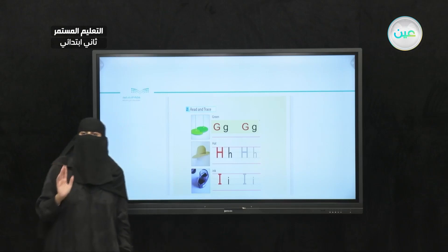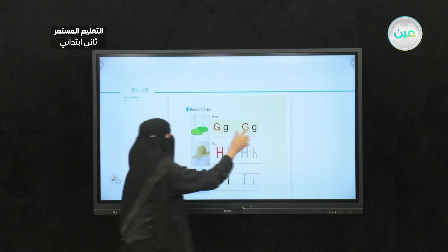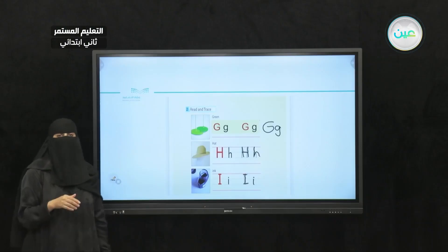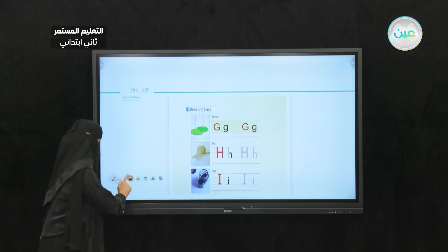G — green, go, geography. Next one, I have the letter H. I have capital H and small h. The word here is hat. HA, hat. Very good. Next one is the letter I. Capital I and small i. The word is ink.